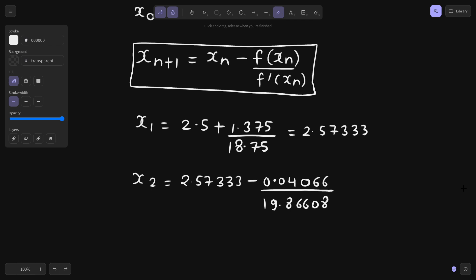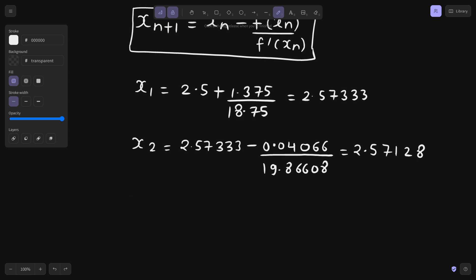2.57333. This is going to give us if I write till 5 decimal places, 2.57333. So this will give us 2.57128. Currently, it is matching till 2 decimal places. But in the problem they have asked to match till 4 decimal places. So let's see. Let's find the value of x 3.